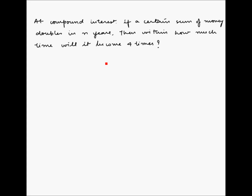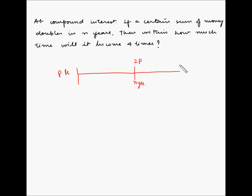In compound interest, if a certain sum of money doubles in n years, then within how much time will it become four times? Let's say a certain sum of money P rupees has been put on compound interest. Within a time frame of n years, the amount is becoming double itself, so the total amount is two times P. We have to find out that if the same rate continues, within how much time will it become four times?